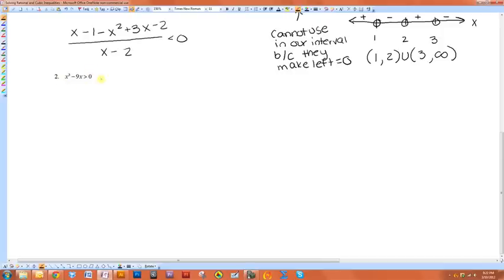To solve this cubic inequality, I first need to factor it. So there's the greatest common factor of x. So that will leave me with x squared minus 9 is greater than zero. Now this is a difference of two squares, so I can factor it again to x minus 3 times x plus 3 is greater than zero.